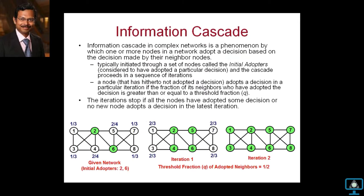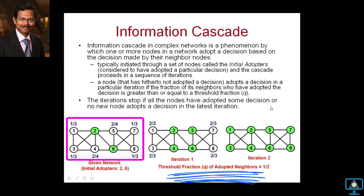Just a quick review of what is information cascade. The information cascade is a phenomenon in complex networks in which one or more nodes will try to adopt a decision based on the decision made by neighbor nodes. In social networks, you have people who have made a final decision — say, buying a particular product or voting for someone. Using those people as initial adopters, we'd like to make everyone in the network adopt the same decision. There's a threshold fraction Q of neighbors who need to have adopted the decision for new nodes to adopt.